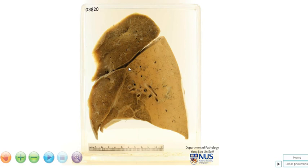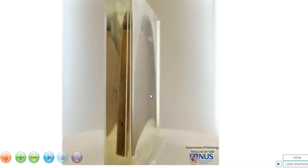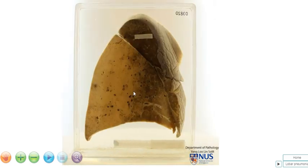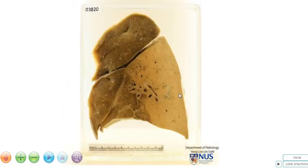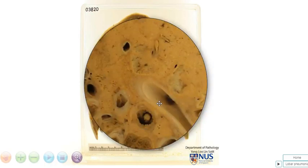Hello, this is the specimen of the right lung, showing the upper lobe, the middle lobe, and the lower lobe. You can see that the lower lobe is obviously abnormal, and let's zoom closer in using the magnifier.